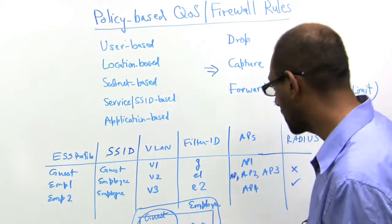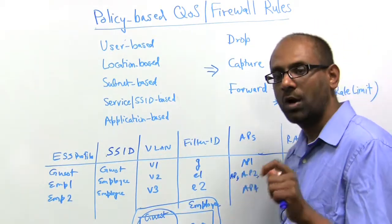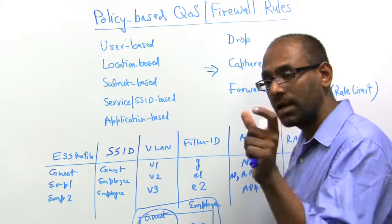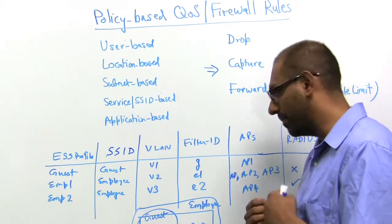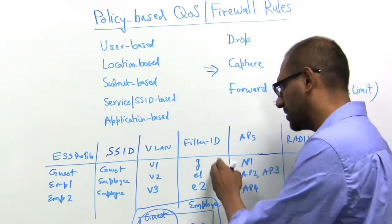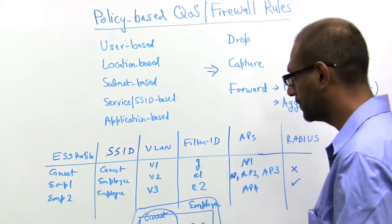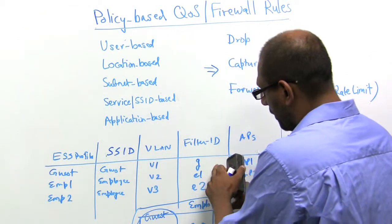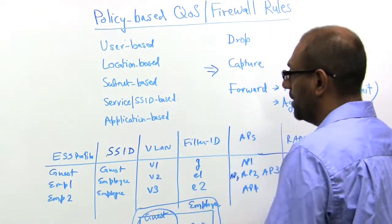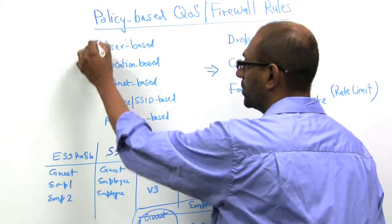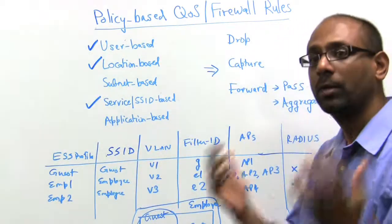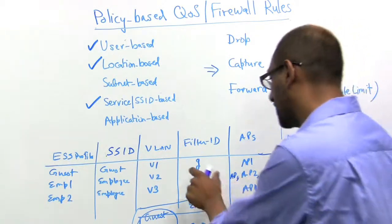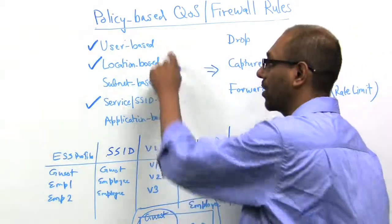So now what I'm going to describe is how we use a combination of the user IP address or the source and destination IP address based on the access of the user, as well as the filter ID of the user. Notice that the way we assign filter ID, we can already do it user-based, location-based and SSID-based. We just talked about how you can ascribe these policy IDs based on a combination of these three.